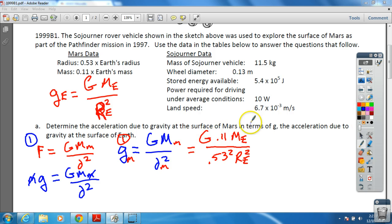We have G, we have ME, and we have RE squared. So if I just say let's ignore these things and replace this with this, we can plug the gE in right at this point.